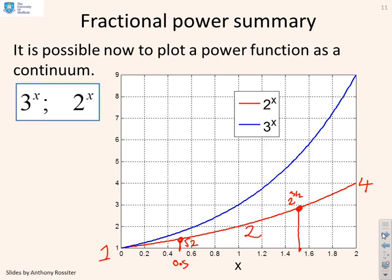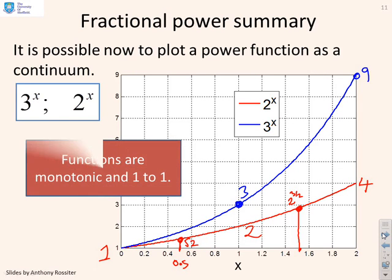Now clearly, if I go to 3 to the power x, then x equals 1, I get 3, x equals 2, I get 9, and so on. And here's an important observation. These functions are monotonic. You can see they're continually increasing as x increases, then 3 to the x increases, all the way up to infinity. So they're monotonic, and another term you'll come across, they're also 1 to 1, which means for every value of x, there's a unique value of 3 to x, and vice versa.